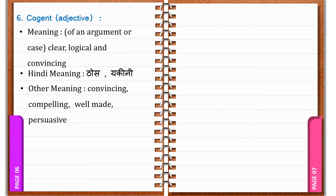Cogent. C-O-G-E-N-T. Cogent. It's an adjective. It means clear — of an argument or a case — logical and convincing. In Hindi: Dhos, Yakini. Other meanings: Convincing, Compelling, Well-made, Persuasive.